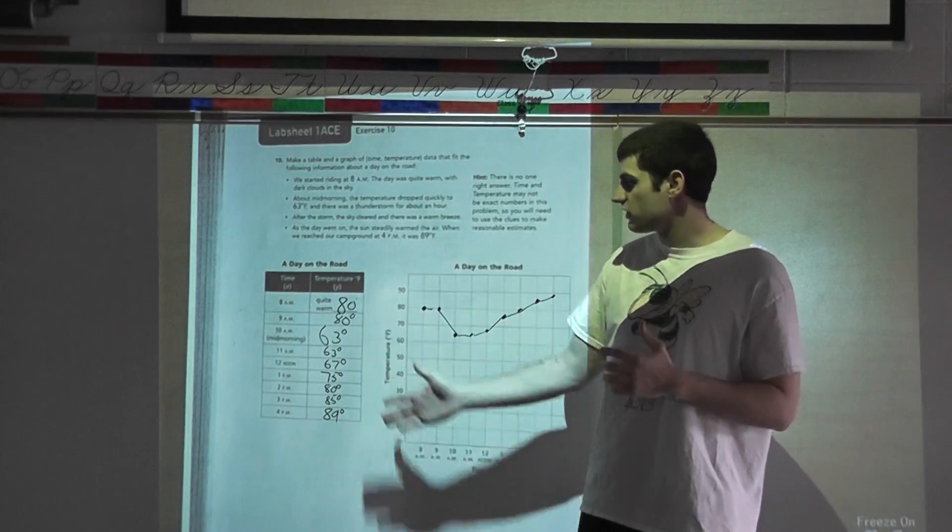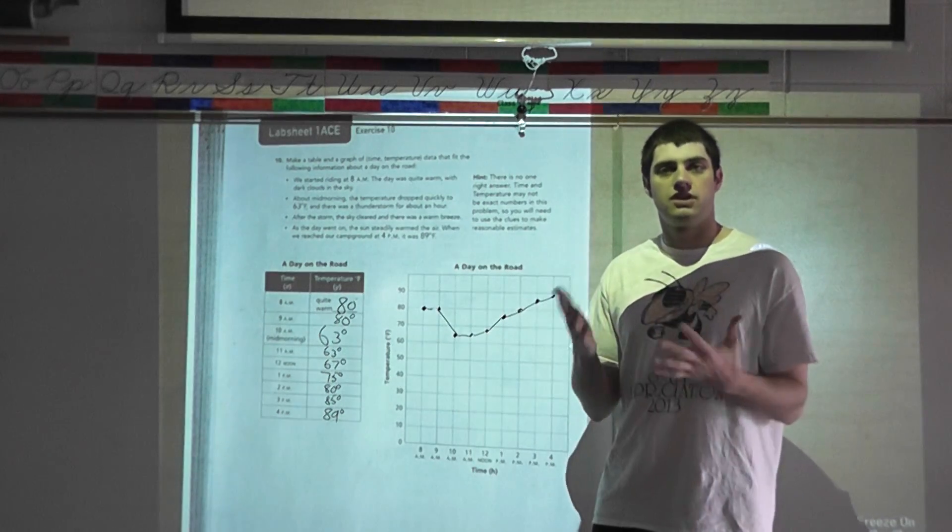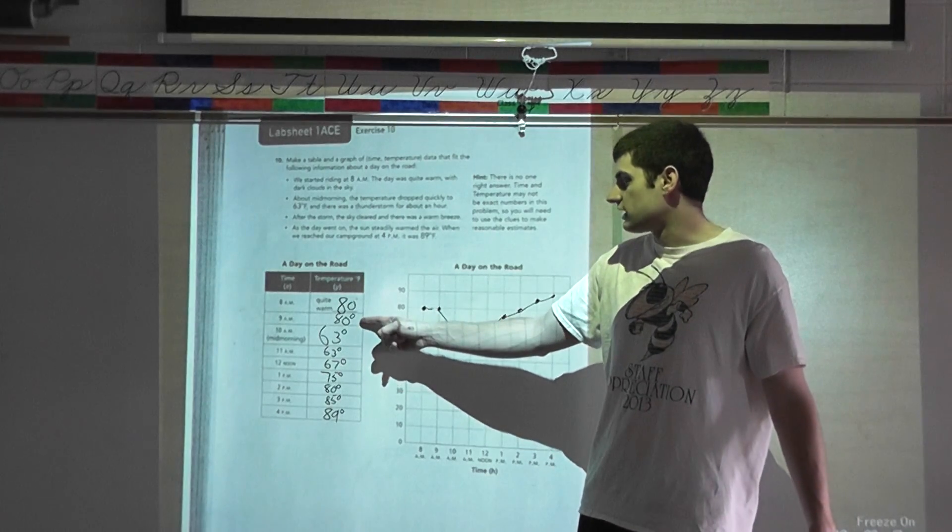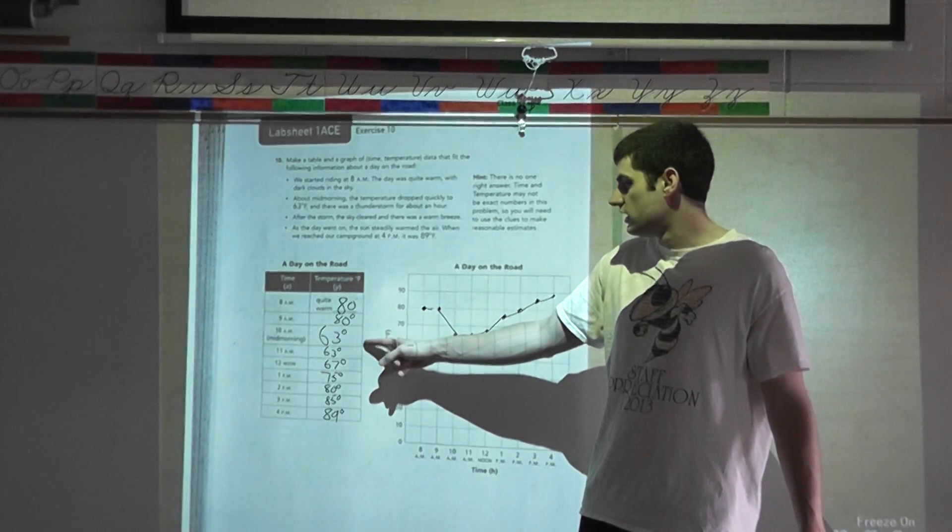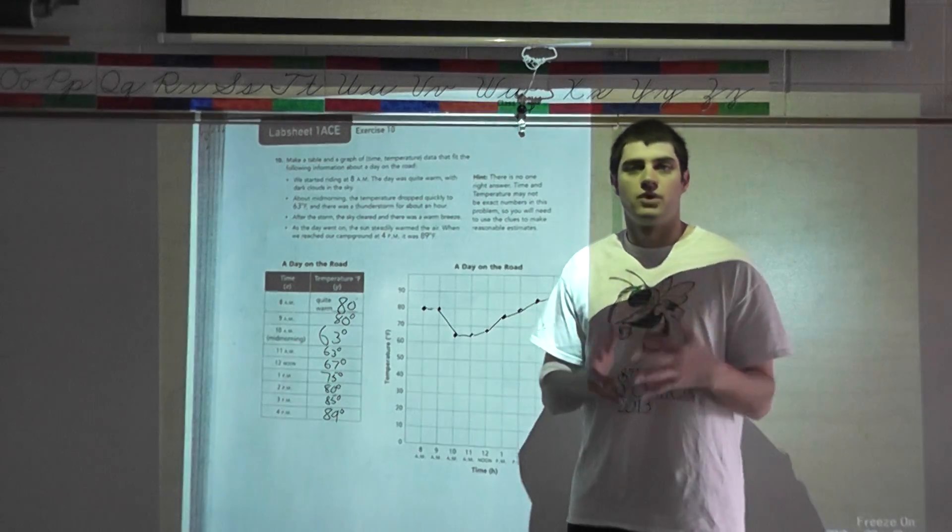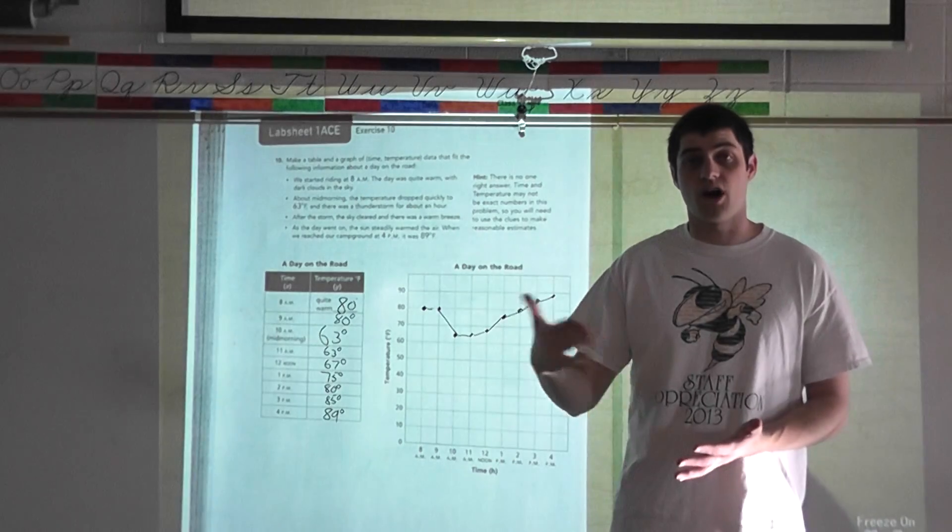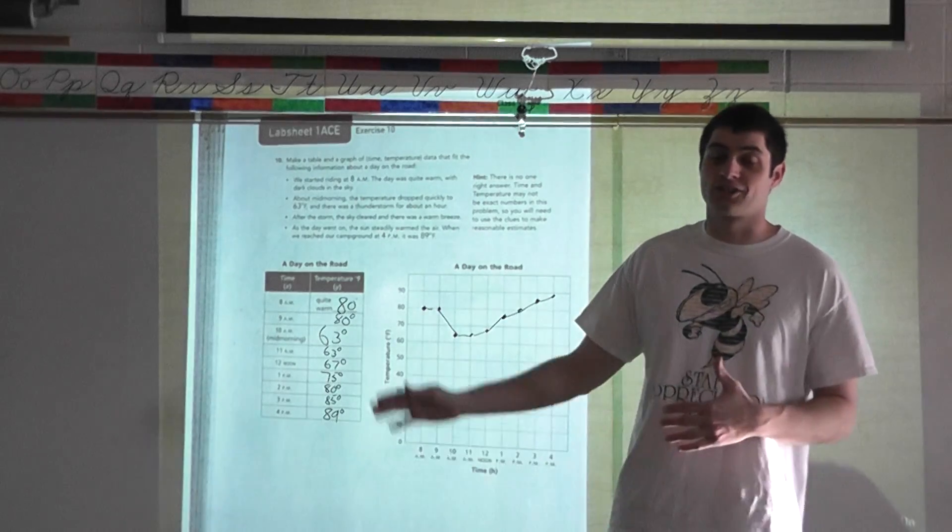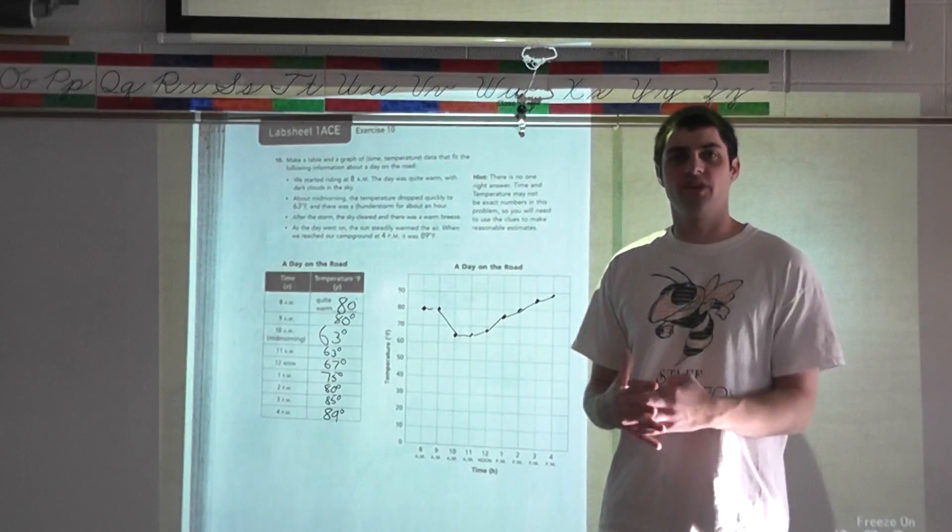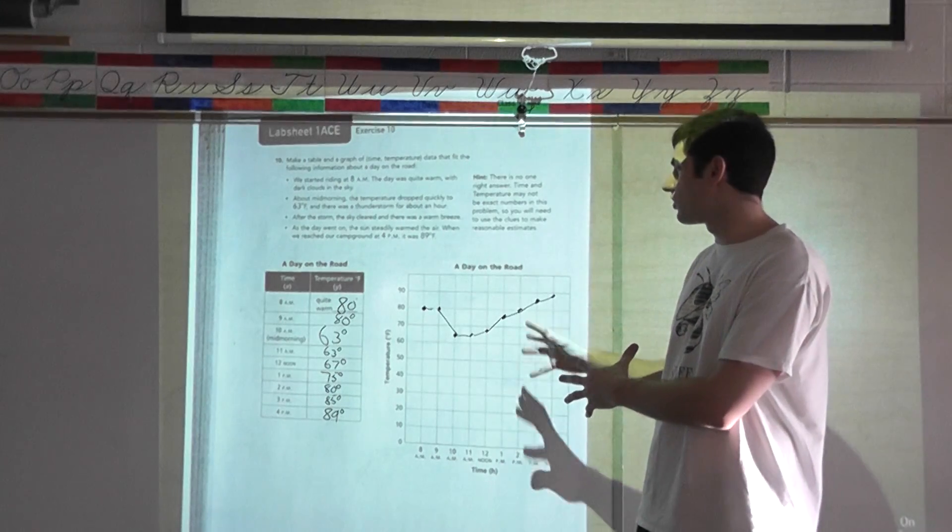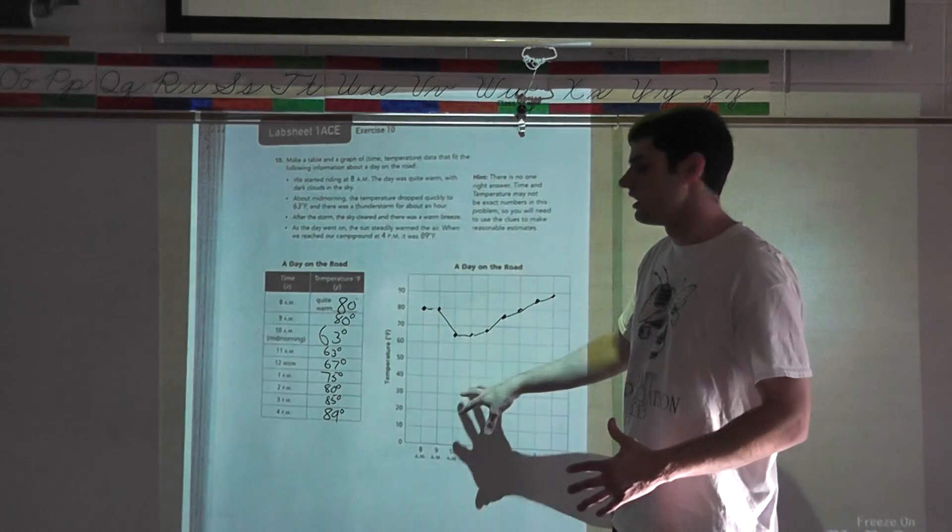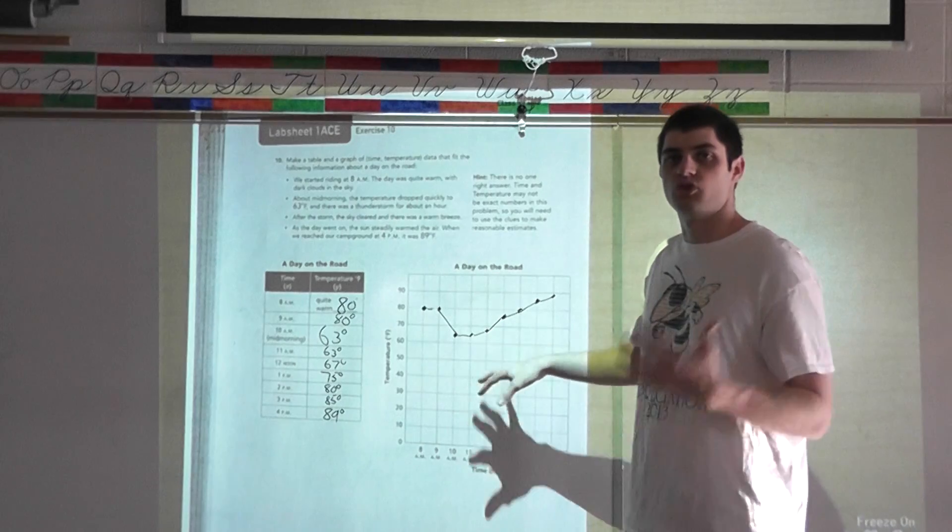Even if I didn't have this information up here on the side, if I were to look at this graph, I'd be able to tell, well, something had to have happened here for the temperature to drop. Was it a storm? This goes back to analyzing the tables and the graphs to see what information we can see. If I wanted to look at the table and find the rate of change, for every hour, how did the temperature change? I can also figure out the average temperature for the day as well from 8 a.m. to 4 p.m.